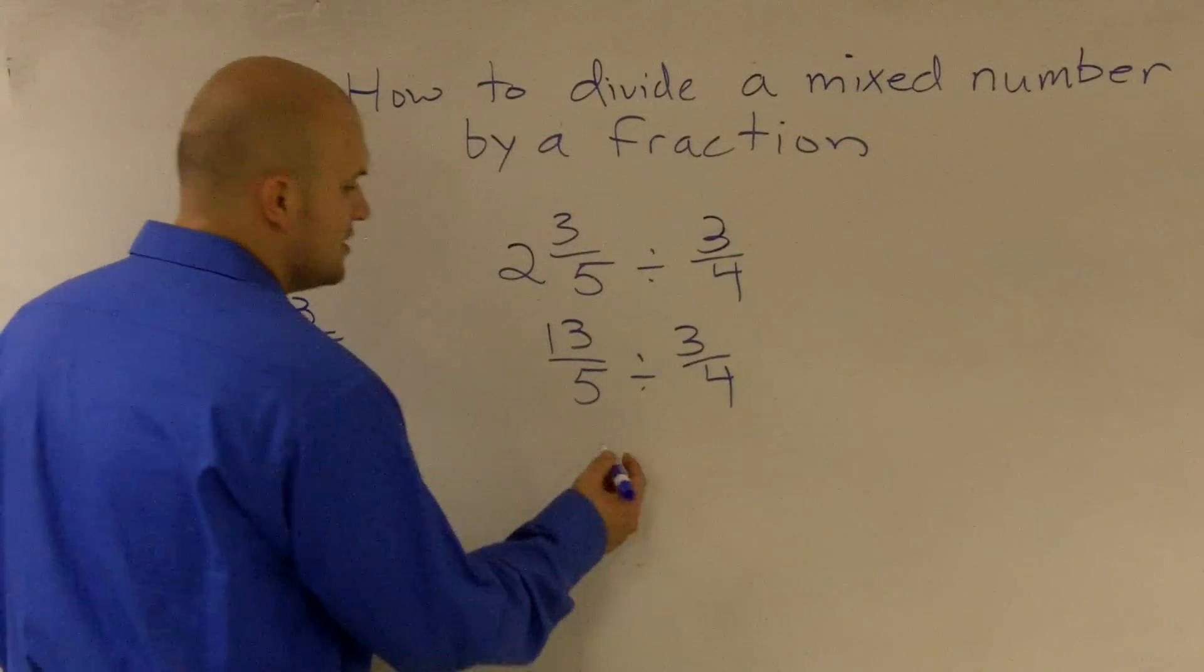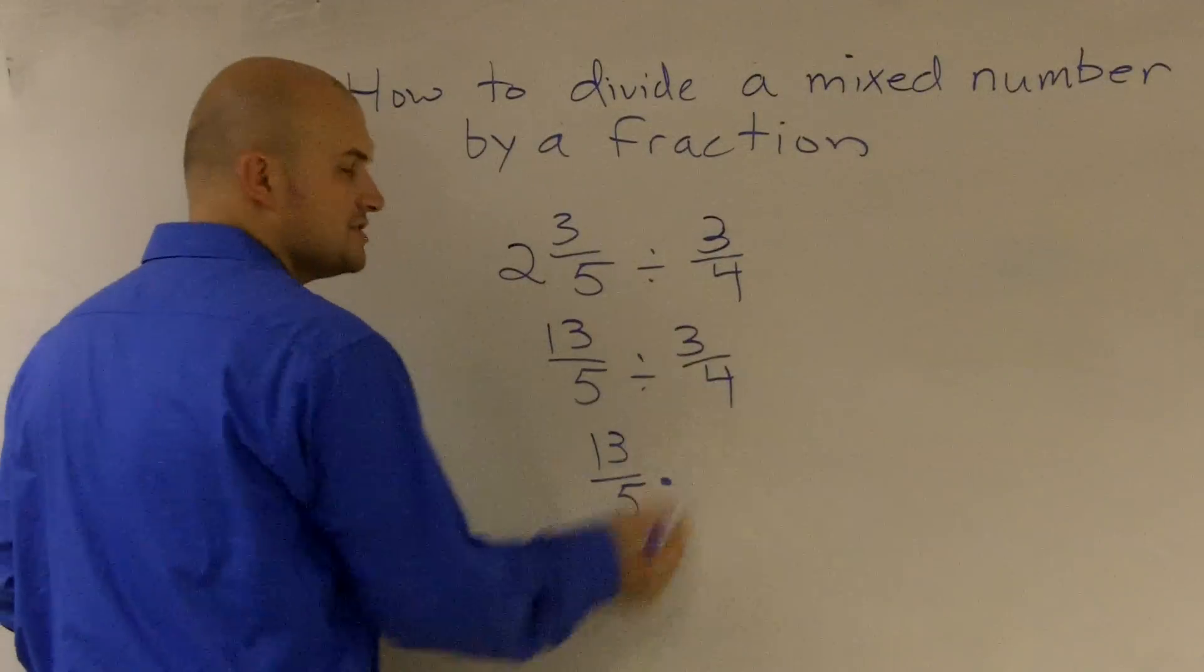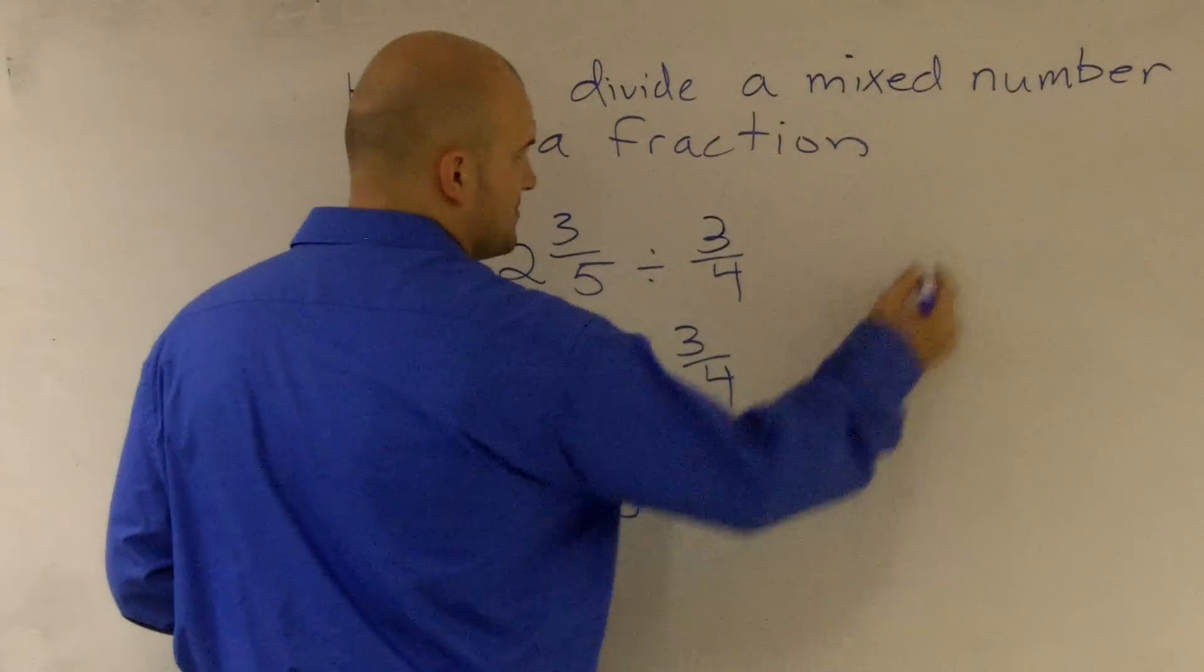And then you can go ahead and multiply across. So I'll have 13 fifths multiplied by, now the reciprocal of 3 fourths is going to be 4 thirds.